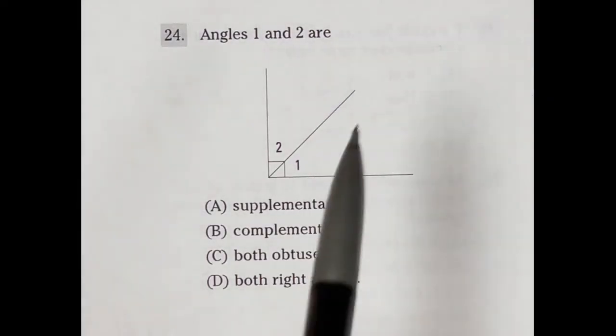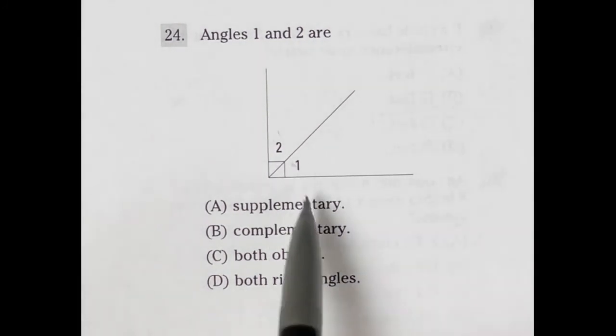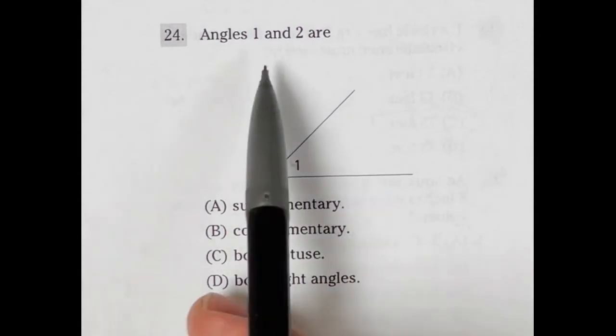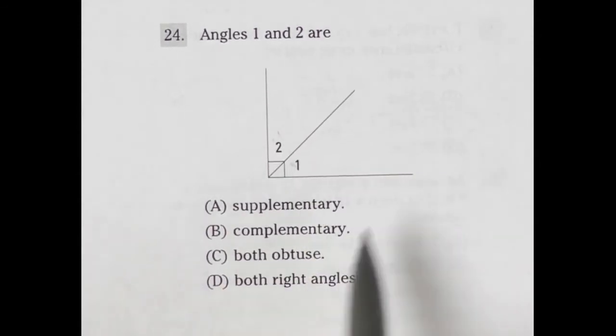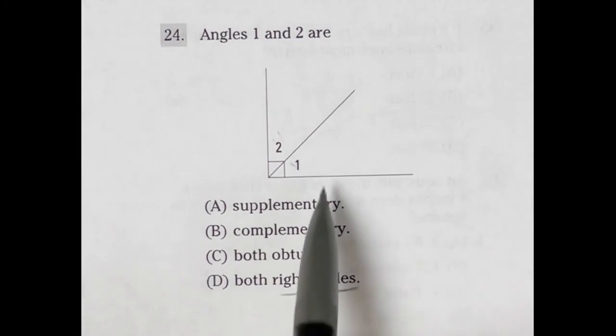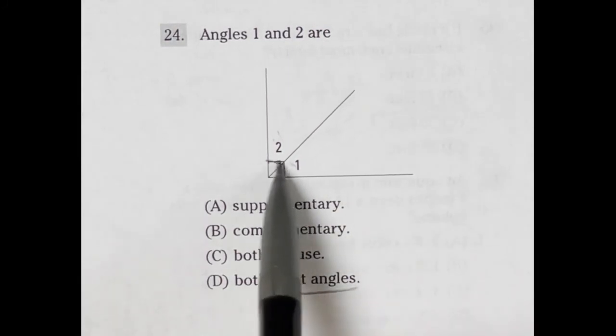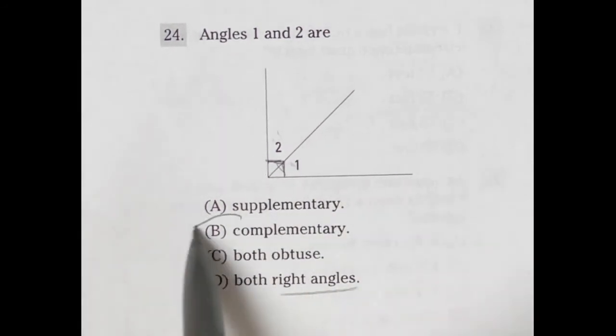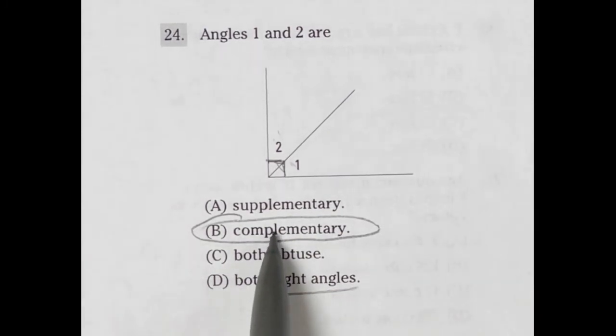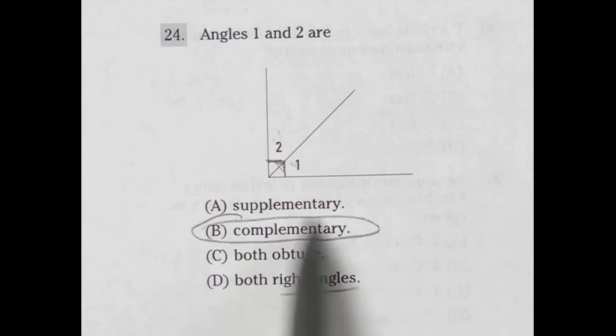Number 24 on the ASVAB is another definition question for mathematics. We're looking at two angles here, and it wants to define them in one of these ways. So 1 and 2 are, well, together they make a right angle, but individually they are not, because that means this is 90 degrees right here, which is what this box means. It's 90 degrees. But we do know that if two angles add up to 90 degrees, they are called complementary. That is the word vocab for that. So these two add to 90 degrees, meaning they are complementary.